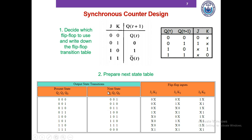The next state table is now constructed. We then build 6 Karnaugh maps for each of the variables: J2, K2, J1, K1, J0, and K0. In each Karnaugh map, we use the present state of the flip-flops — Q2, Q1, Q0 — as the input variables, and the flip-flop inputs J2, K2, J1, K1, J0, K0 as the outputs of the Karnaugh map.